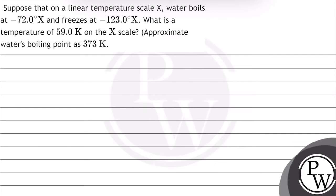Hello bachyo, let's read this question. The question says, suppose that on linear temperature scale X, water boils at -72°X and freezes at -123°X. What is the temperature of 59 Kelvin on the X scale? Approximate water boiling point as 373 Kelvin.